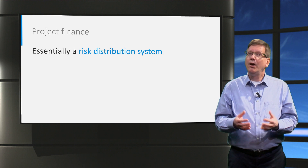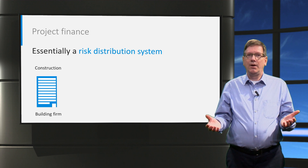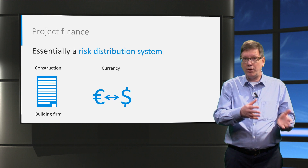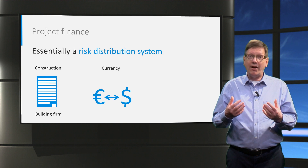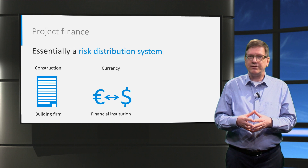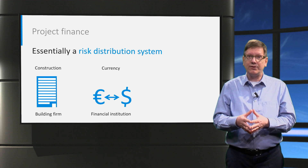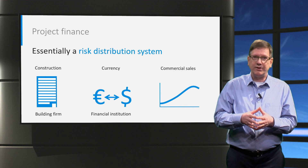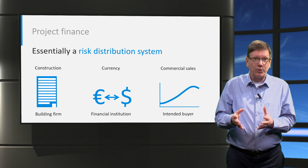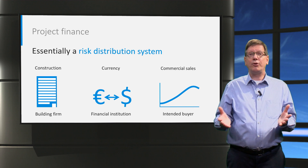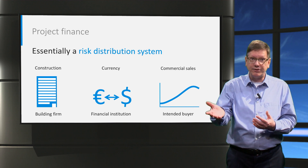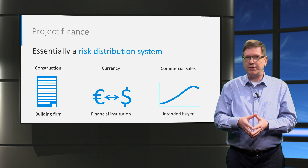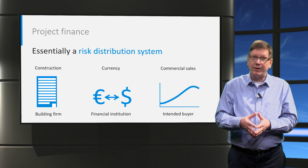Let me give you some examples. For construction risk, that's often a building firm — a financial institution will not be keen to assume such a risk. But for a currency risk, such as the conversion of euros into dollars at an ever-changing exchange rate, a financial institution will be better placed to assess and assume this risk for a price, because currencies are part of their core business. A third example: for the sales risk — being able to sell a product or service produced by the project — often the intended buyer will know best how to manage that. If the project company builds a power plant, the sales risk of electricity is best assessed by a power utility company. We can try to allocate that risk to that utility through a so-called power purchase agreement, or PPA — and we'll see later that that is exactly what happens in such situations.